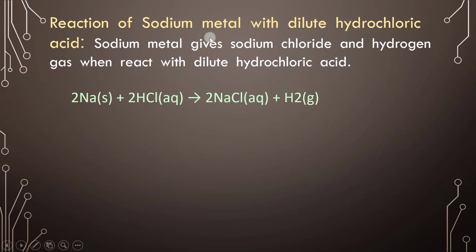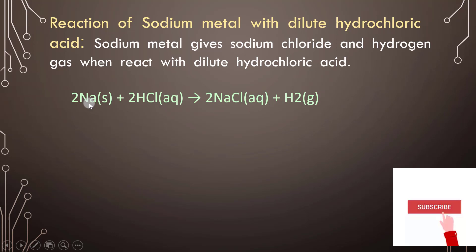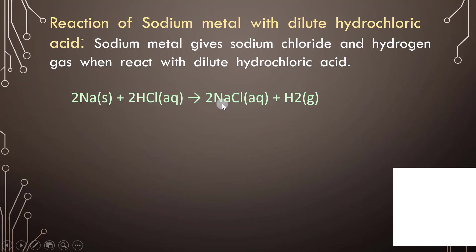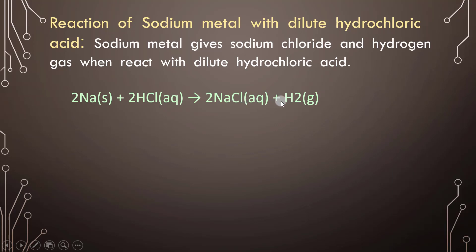Next, the reaction of sodium metal with dilute hydrochloric acid: sodium metal gives sodium chloride and hydrogen gas when it reacts with dilute hydrochloric acid. Again we get a metal salt and hydrogen gas. The equation is: 2Na + 2HCl → 2NaCl + H₂.